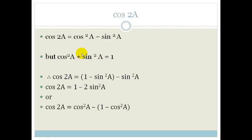Or we could have gone, instead of substituting for the cos²A, we could have substituted for the sin²A and written that sin²A is 1 minus cos²A. And then it becomes cos²A minus 1 minus cos²A, which becomes 2 cos²A minus 1.